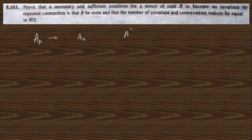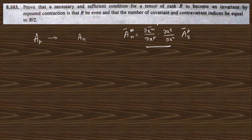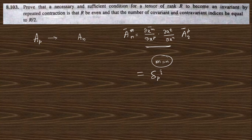In any other tensor, this can be written as: the transformation gives terms like del x^p del x^m times del x^q del x^n into A_pq. For rank 2, if it is invariant, there is no extra term. If you want to perform repeated contraction — contraction means putting indices equal — you put P equal to Q, then the indices like M and N become equal, giving A_pp, which is called invariant.